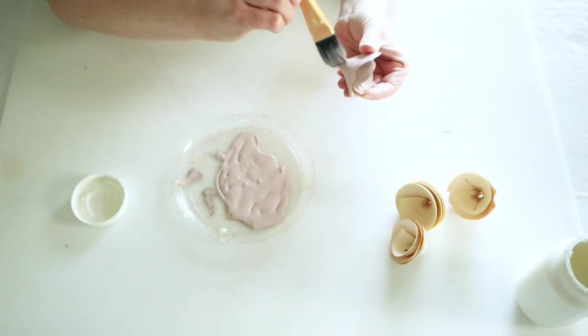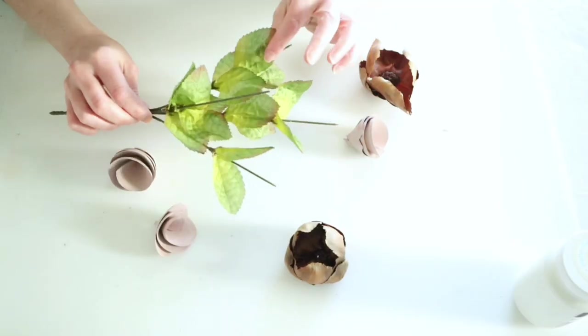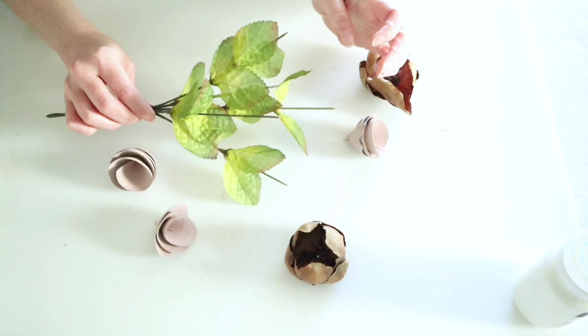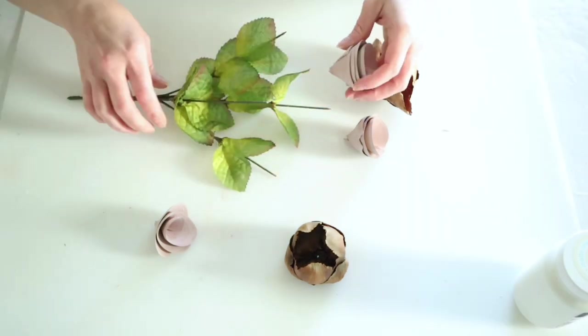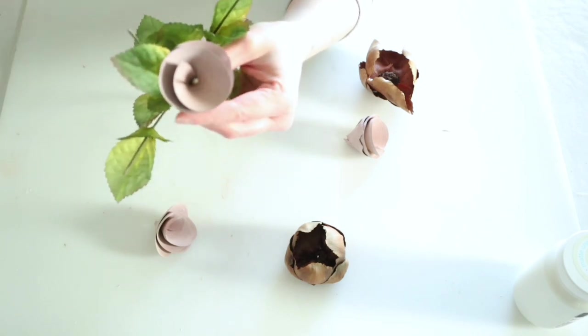I should have used a smaller paintbrush because it was difficult to get down into those rose curls. I only ended up having enough for one of my greenery stems that I had left over.